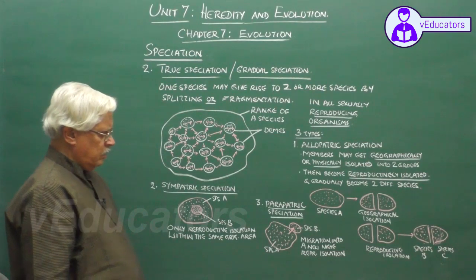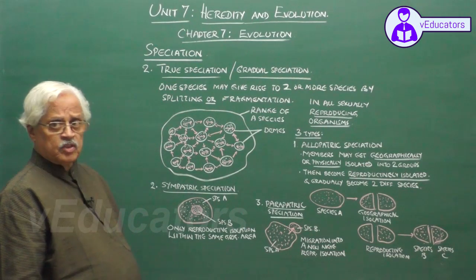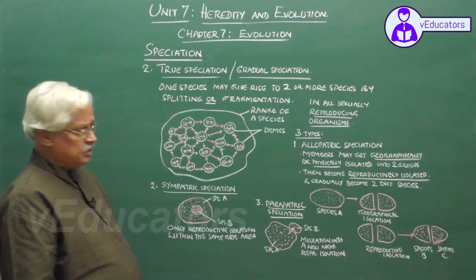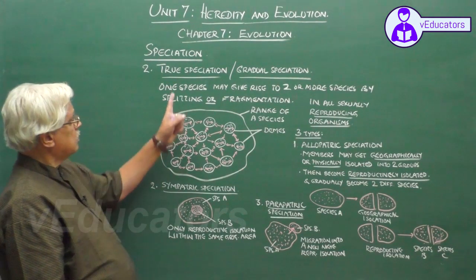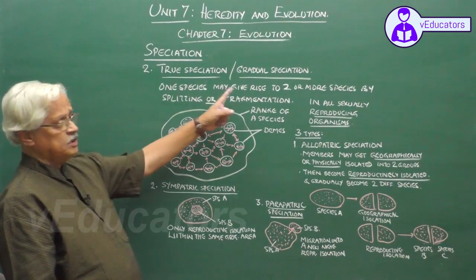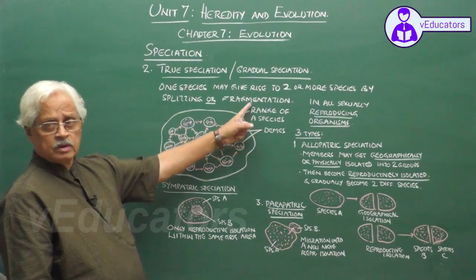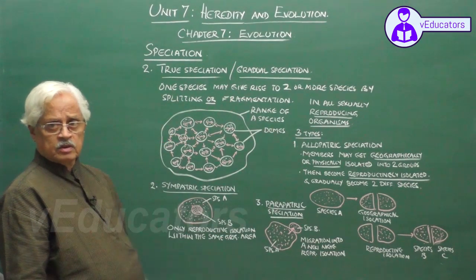These are the three possibilities of true speciation or gradual speciation.